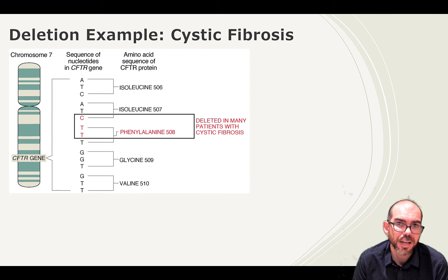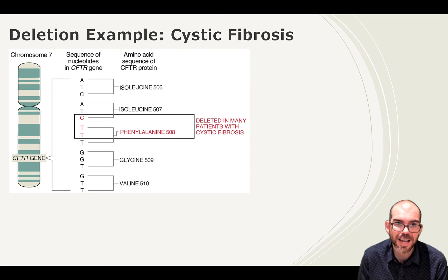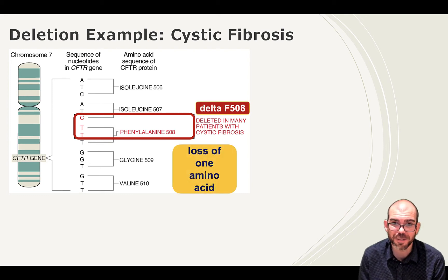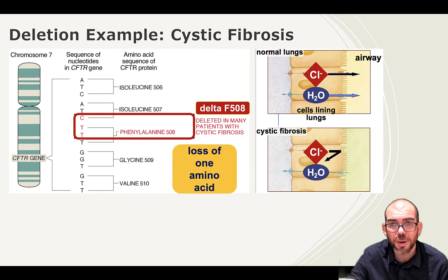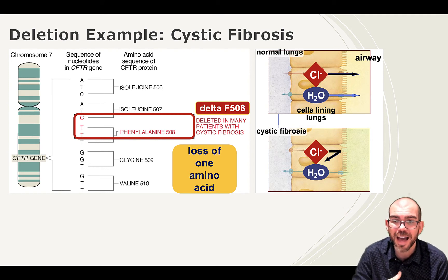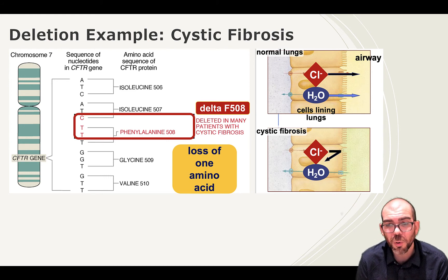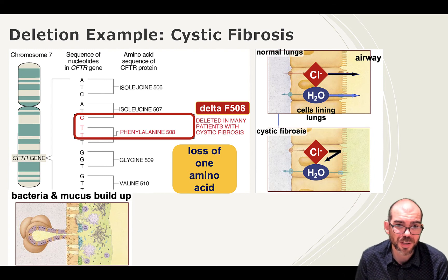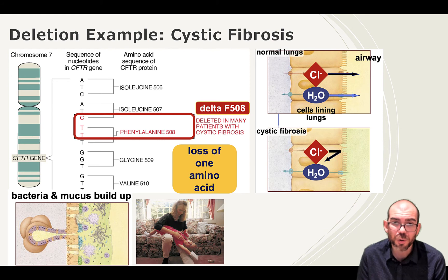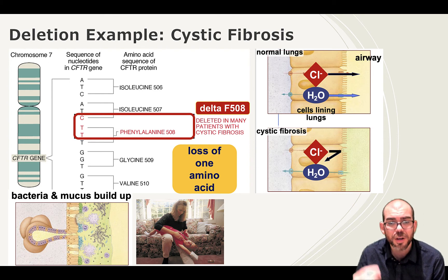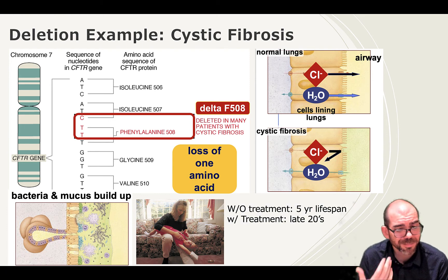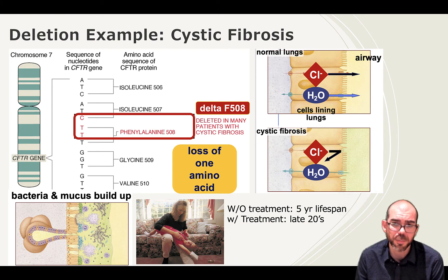An example of a deletion is the disease cystic fibrosis. Cystic fibrosis is caused by a deletion on chromosome 7, which causes a frame shift with devastating effects. By losing that one amino acid, this directly affects the lungs' ability to move molecules through. Normally, lungs move chlorine ions and water so they don't build up in lung tissues and interfere with gas exchange. In the case of this mutation, those chlorine channels shut down, causing a buildup of mucus and bacteria in the lungs that the body can't remove. Individuals with cystic fibrosis require chemical and physical treatment to loosen mucus and force it out of their lungs. Without treatment, someone with cystic fibrosis likely will only live about 5 years, but with new treatments, we've been able to extend lifetimes into their late 20s.